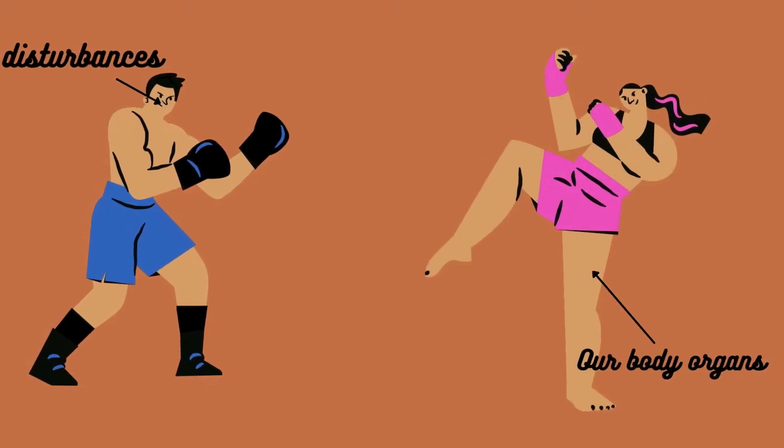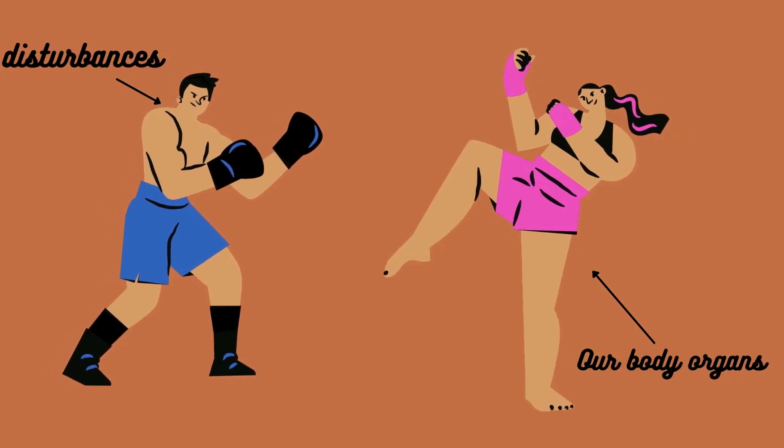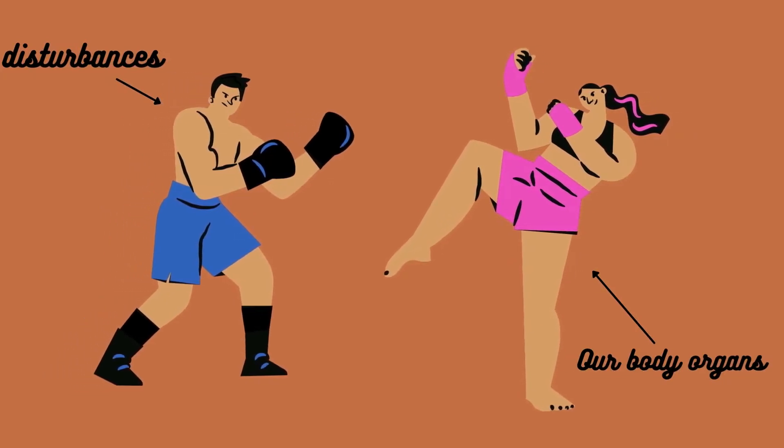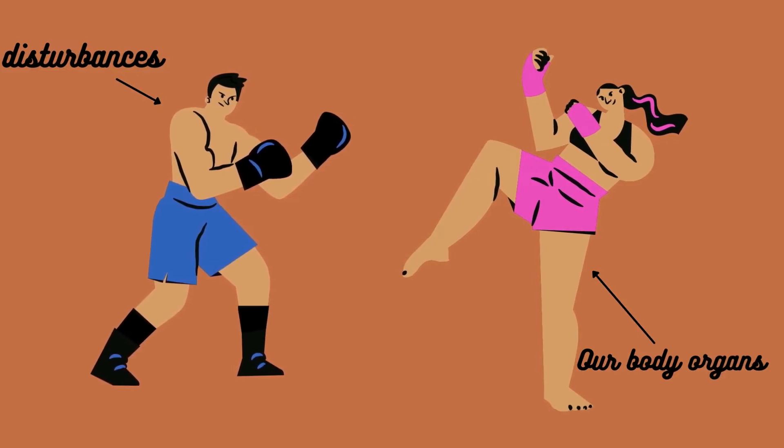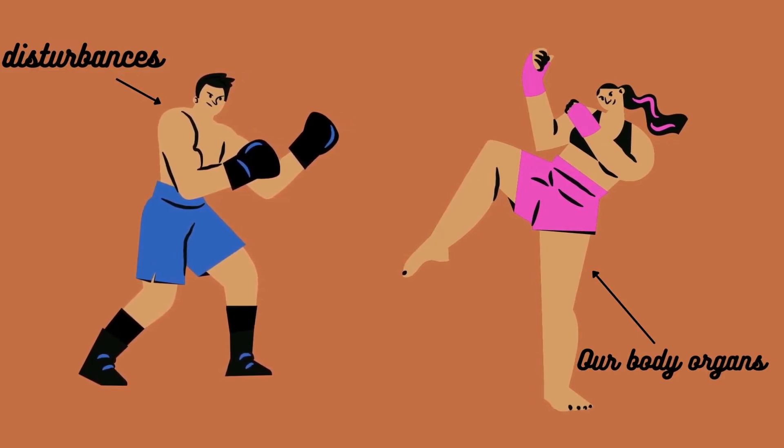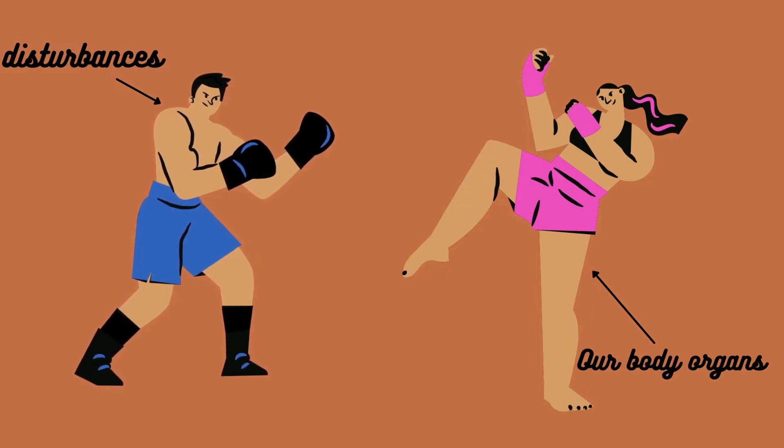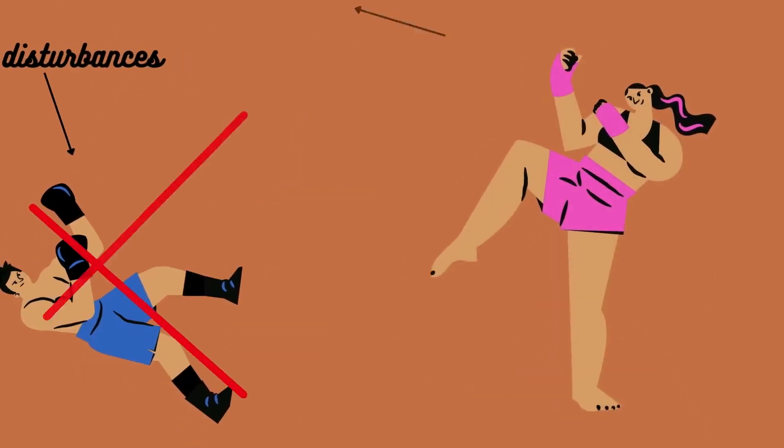Now you can imagine all the disturbances that may cause a homeostatic imbalance as this man fighter. The whole body will contribute in the fight against the disturbances in order to maintain a stable internal environment.